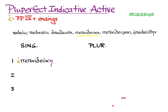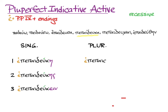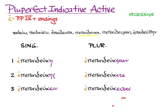With the accent: epepaideukemen — 'we had educated.' Augment, stem, ending, accent — epepaideukete — 'y'all had educated.' And finally, epepaideukesan — 'they had educated.'